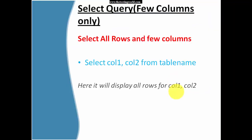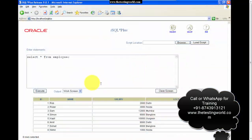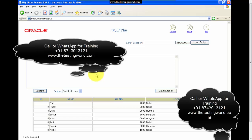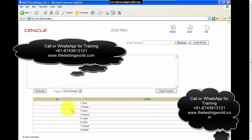The second query is to select data from a few specific columns but all rows. For that we write SELECT column1, column2 FROM table_name. We can write any number of columns separated by commas. Here I'm selecting id and name from the employee table, and after executing we can see only those two columns.